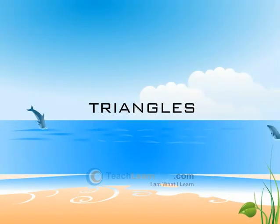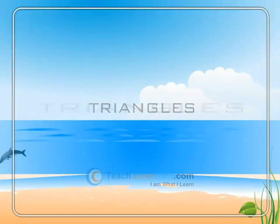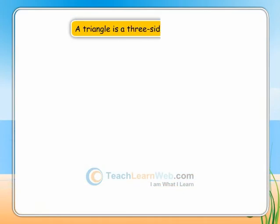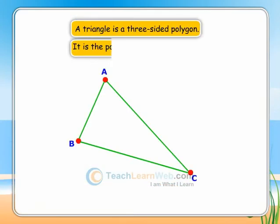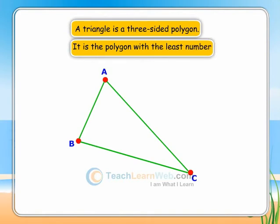Triangles. A triangle is a three-sided polygon. It is the polygon with the least number of lines.